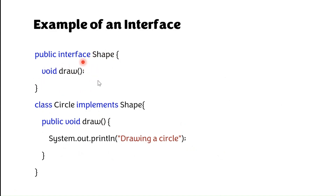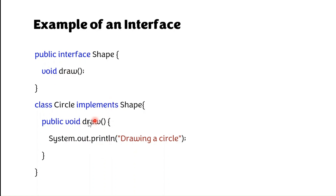It doesn't have any constants. These methods are implicitly public and abstract, and they must be implemented in the class itself. The implements keyword is used to implement the interface. The class Circle implements Shape, and these methods have been implemented in the class.